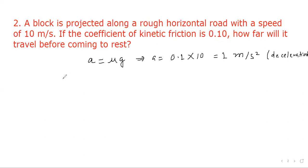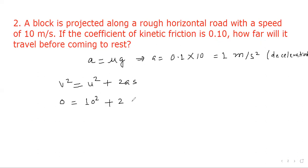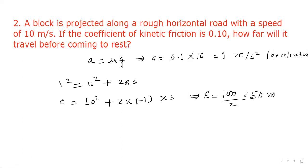We apply the formula v² = u² + 2as. The body comes to rest so v = 0. u is 10, so 0 = 10² + 2 × (−1) × s. From this we get s = 100/2 = 50 meters.